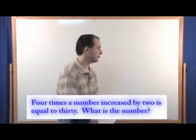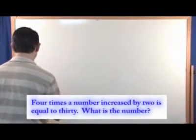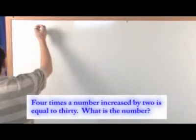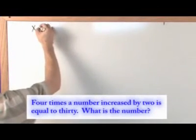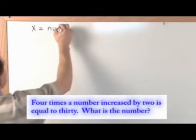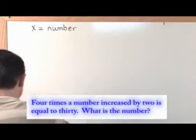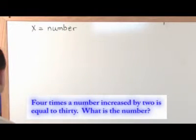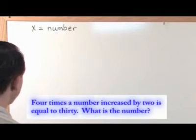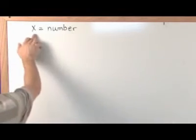So what we're going to do, because we have an unknown here. We have a number. We're going to say that the variable x is equal to the number. The reason I'm doing this is because I really don't know what the number is. That's the whole point. I don't know what the number is. So I'm going to assign a variable to it.